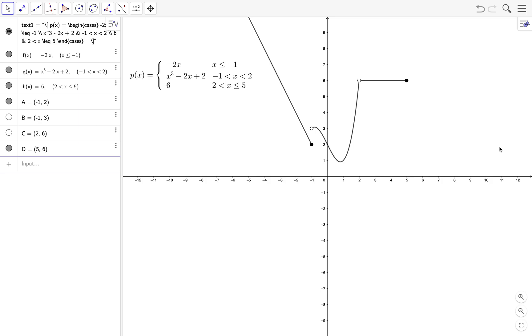Okay, so that's it. Our function p of x equals negative 2x when x is less than or equal to negative 1, x cubed minus 2x plus 2 between negative 1 and 2, and 6 between 2 and 5.